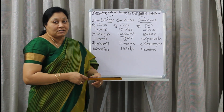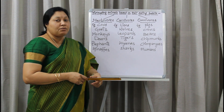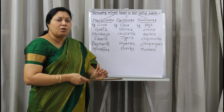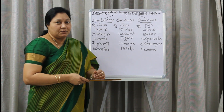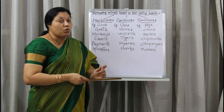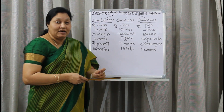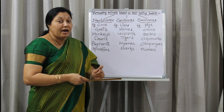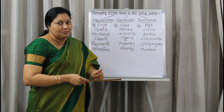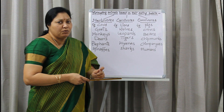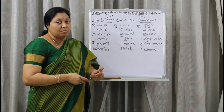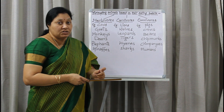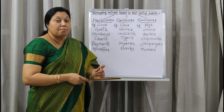Let us learn the meaning of herbivores. It is a word derived from Latin. 'Herba' means a small plant, and 'vorare' means to eat. So herbivores are nothing but plant-eating animals — animals which get their energy by depending on plant food.